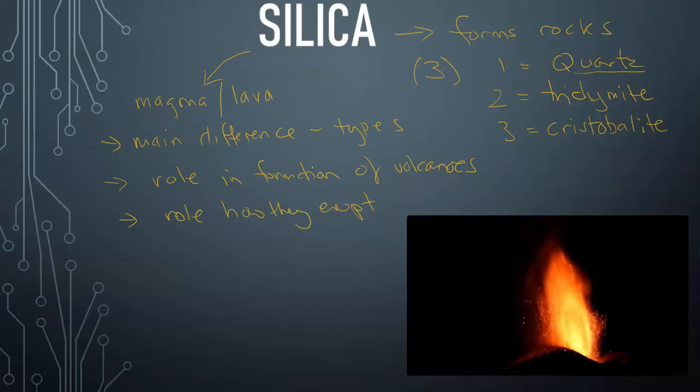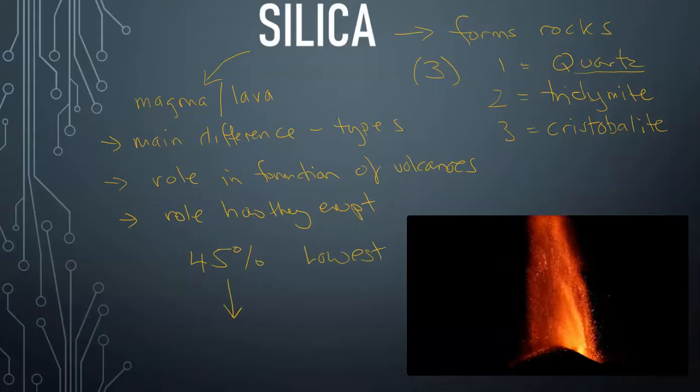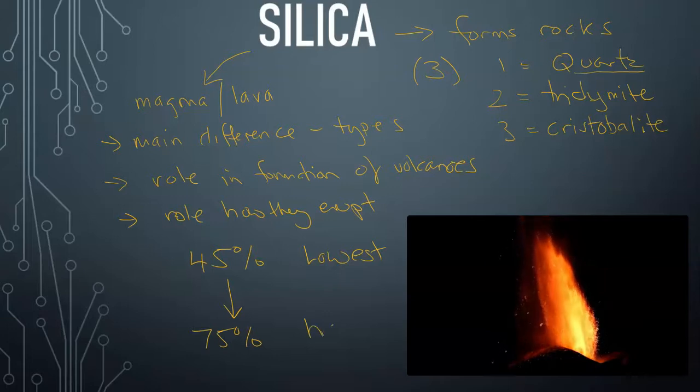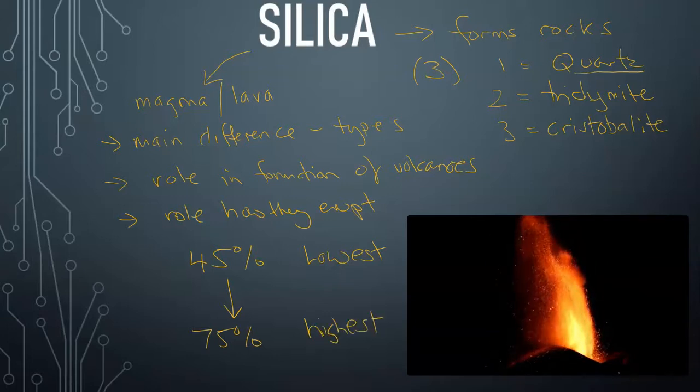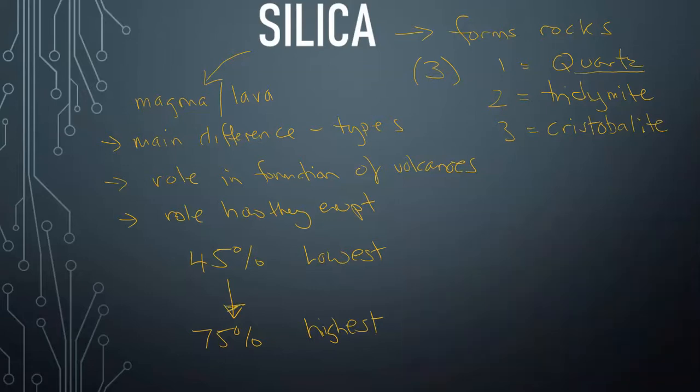Now silica ranges from around 45% being the lowest down to a maximum of around 75% being the highest. Now there are some cases where this may fluctuate in the percentage, but generally between the range of 45 and 75%.